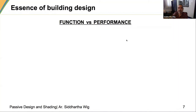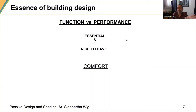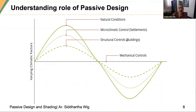We often end up writing specifications for function, but we have been trying over the years to concentrate on the performance of the building — how the envelope, the roof, the windows perform. I look at what is essential in a building first, and then the nice-to-have. Comfort is what we are designing for — thermal comfort, visual comfort and importantly psychological comfort.